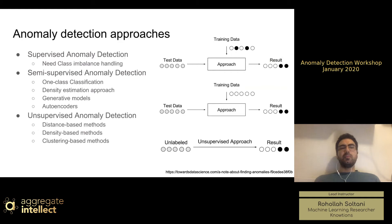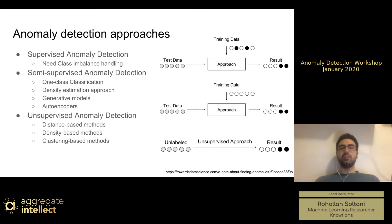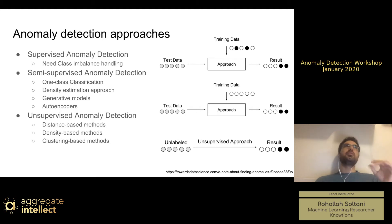We're going to categorize all those techniques in three different groups. The first one is supervised anomaly detection. It means when you have labeled data — in your training data, you have some samples as positive, some samples as negative. The only thing you have to do is train a model. It can be any technique in machine learning: neural network deep learning models, or pre-deep learning models like SVM or random forest, or any model you can use for classification.